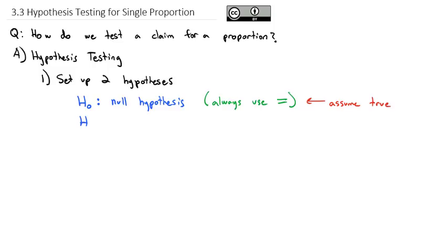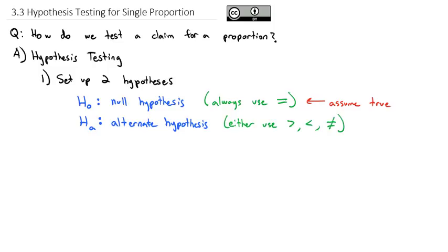If the null hypothesis is not true, the other hypothesis is H sub A, which we call the alternate hypothesis. This is often what we're trying to show to disprove a claim. This will either use greater than, less than, or not equal to — the alternative choice. If it's not equal to a number, it must be different than it.